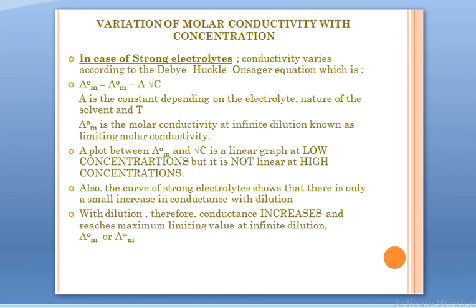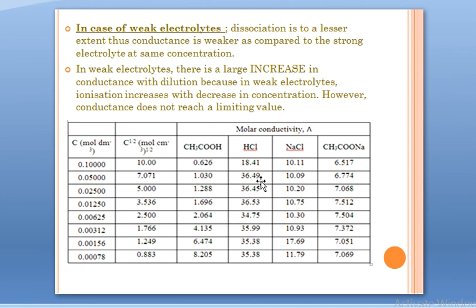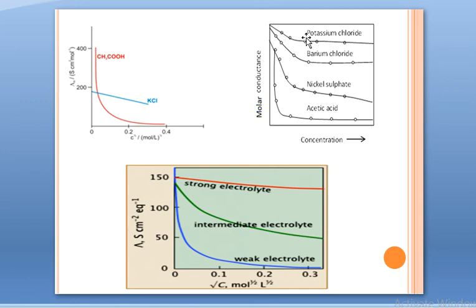However, an important point to remember is that for weak electrolytes, the conductance does not reach a limiting value — there is no λ°_m — whereas for strong electrolytes there is a λ°_m. This table shows variation in concentration in the first column, √c in the second, then columns for the weak electrolyte acetic acid, the strong electrolyte KCl, and a salt. In all cases — weak electrolyte, strong electrolyte, and salts — as concentration decreases (i.e., with dilution) molar conductivity is increasing.